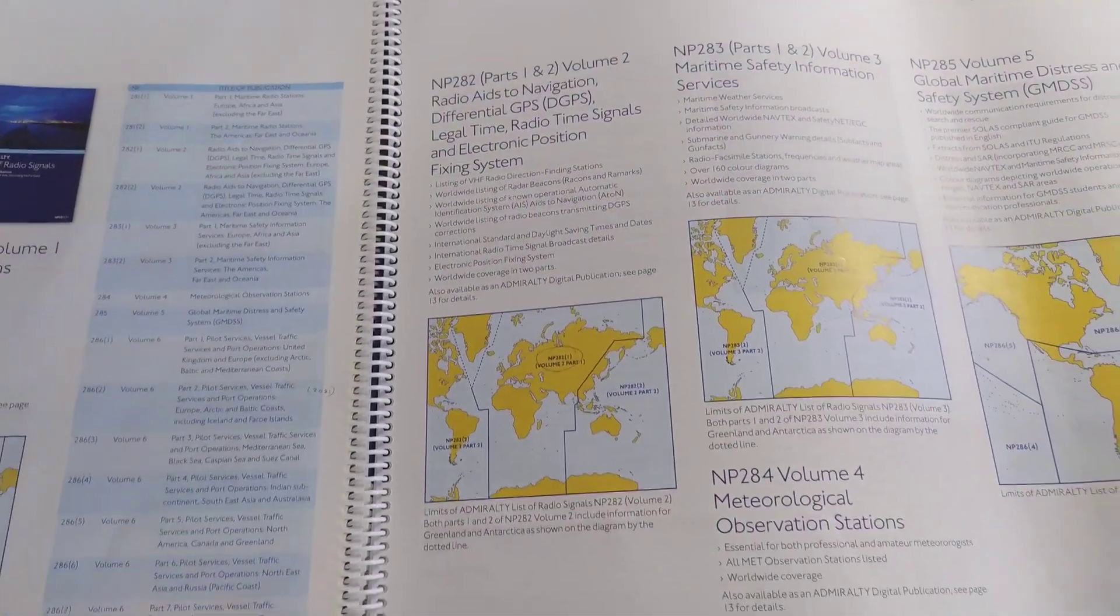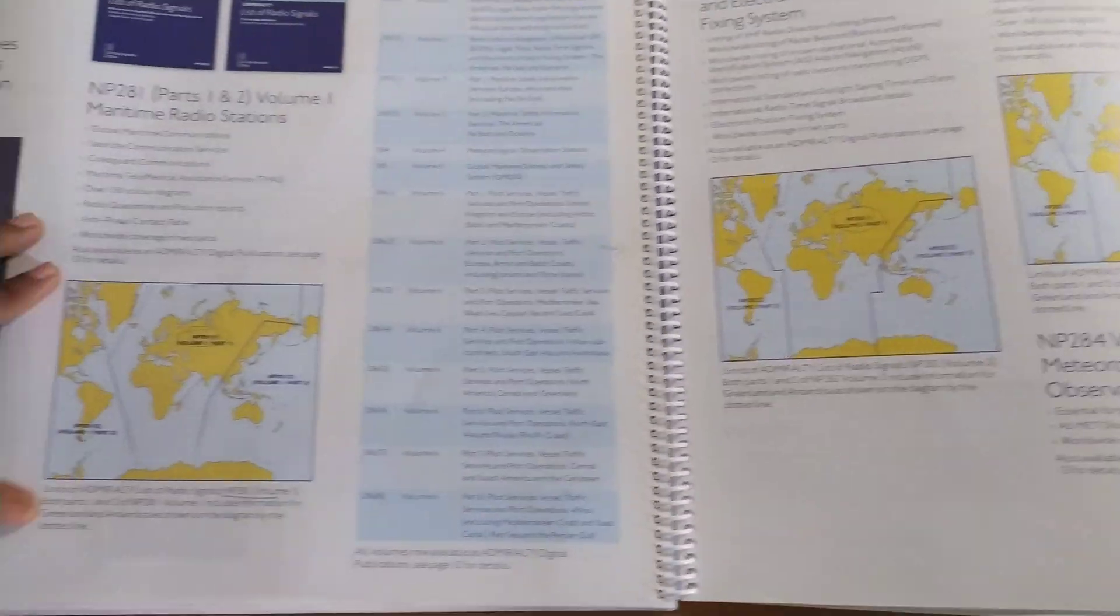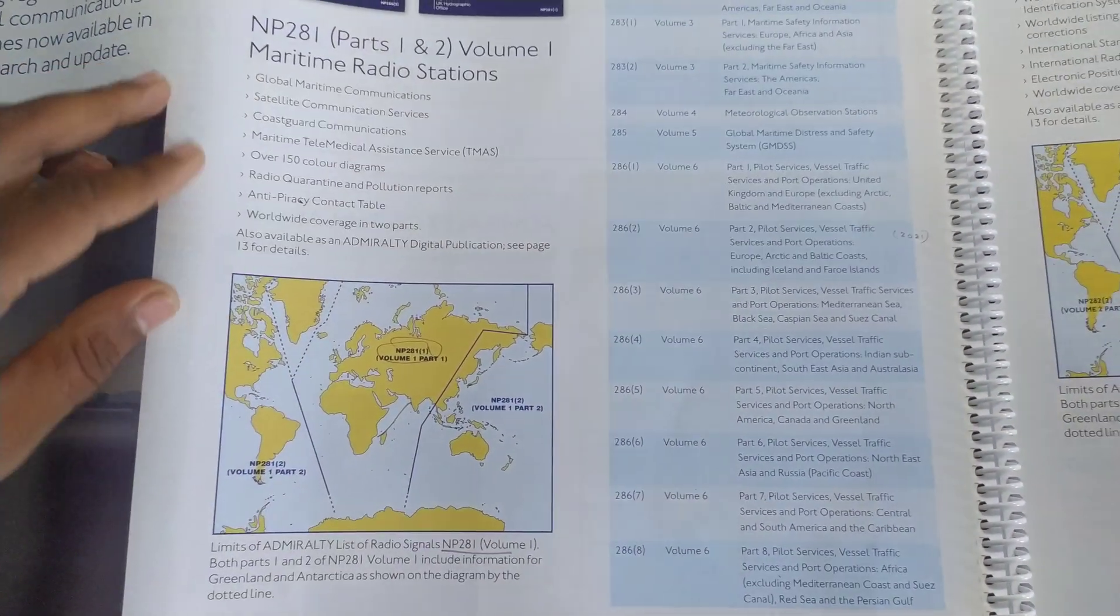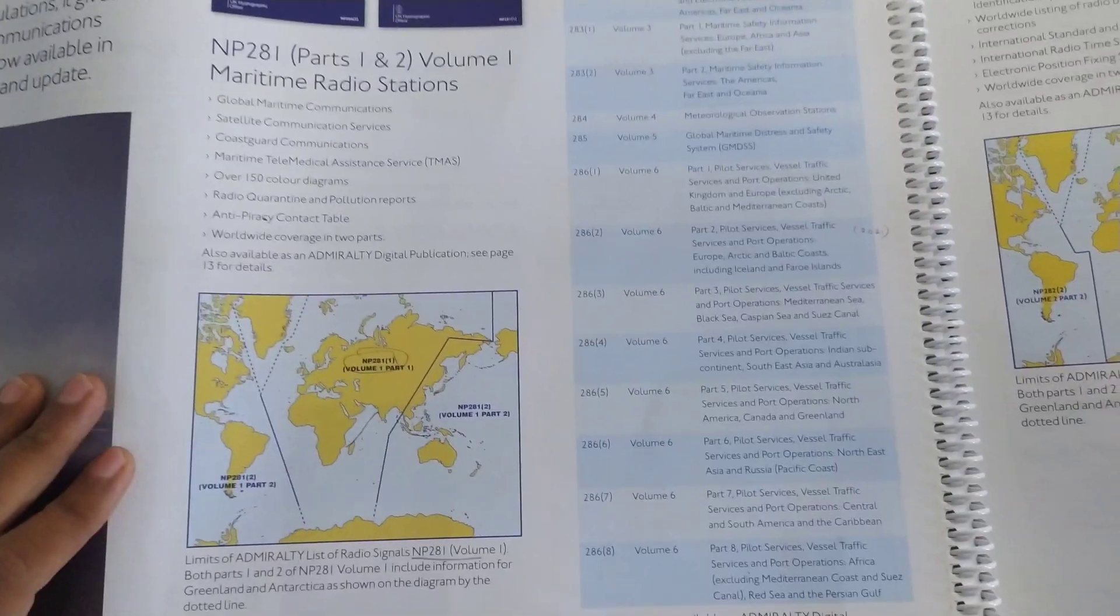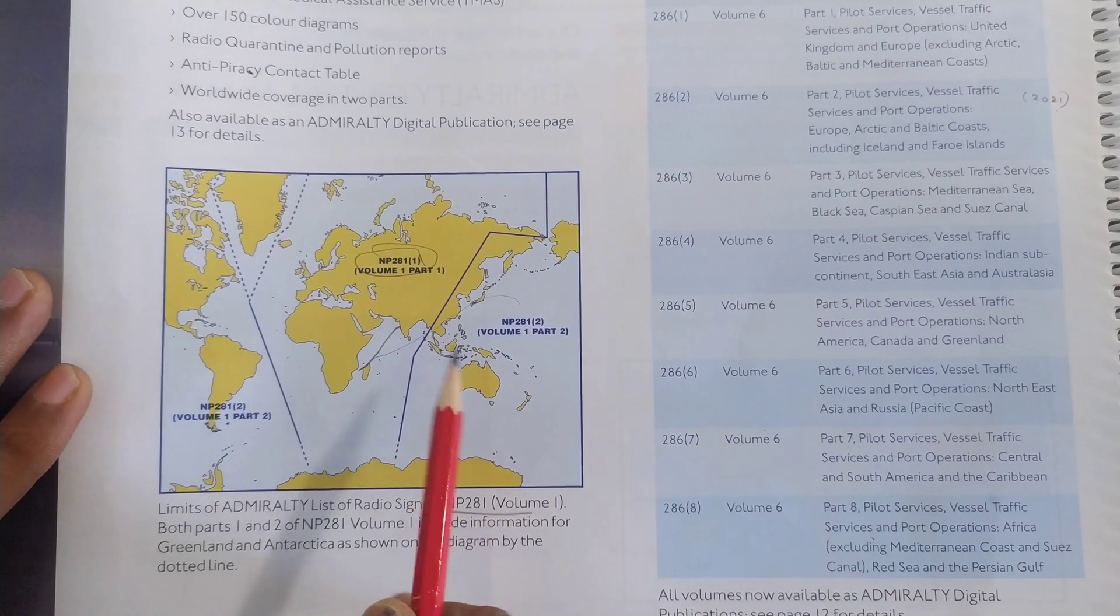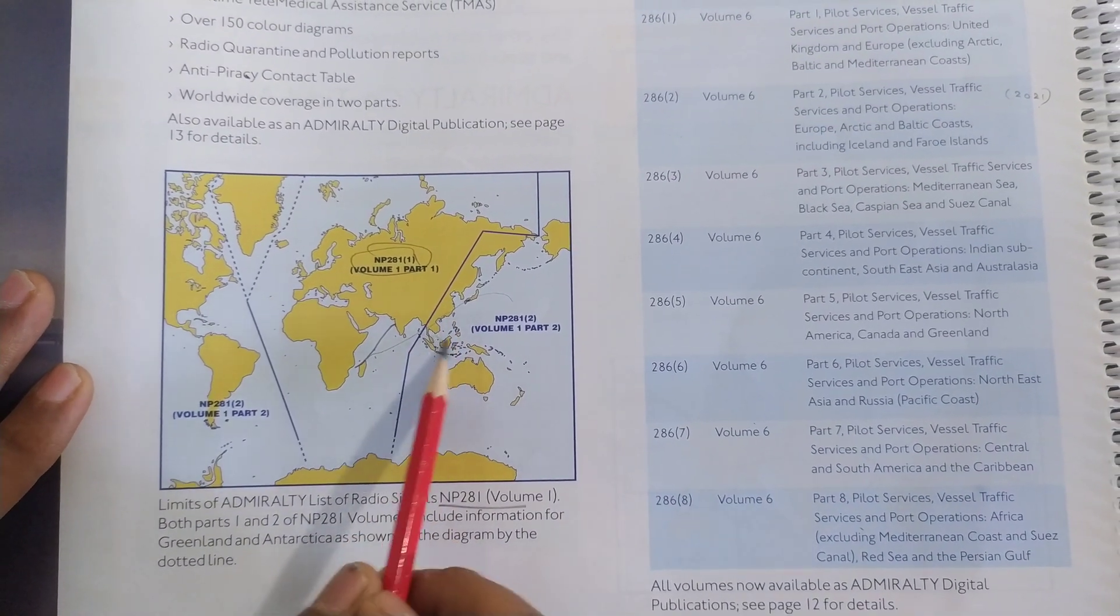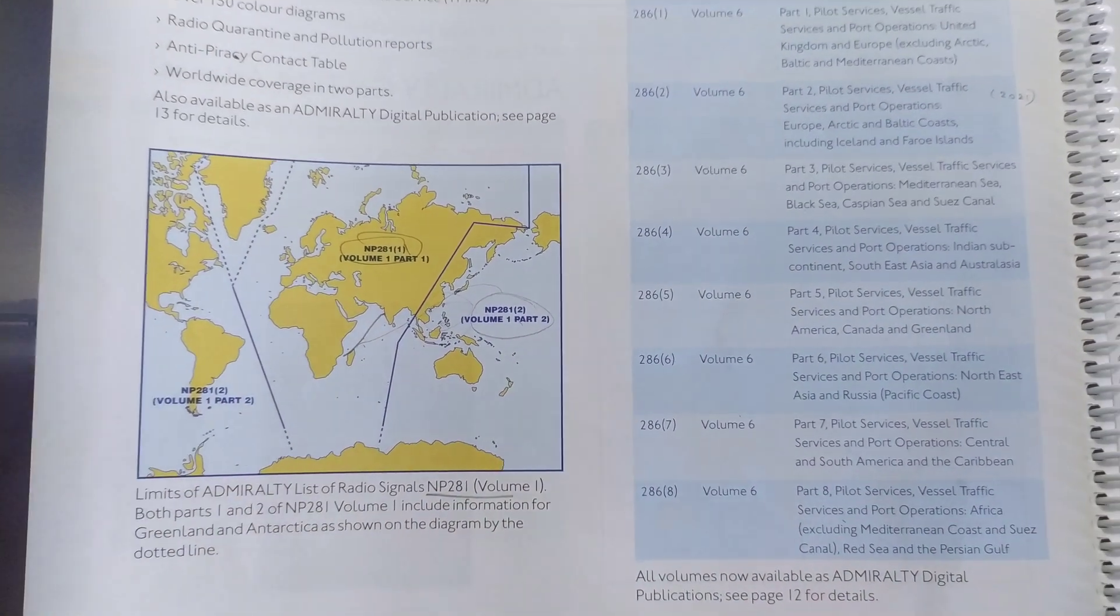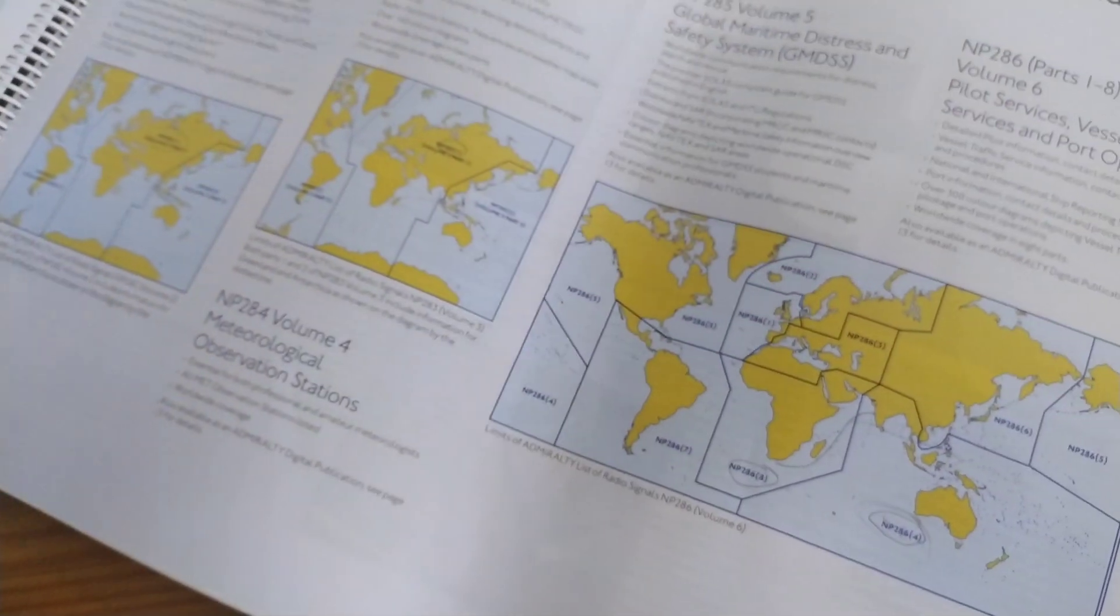Under ALRS, because we are going for NP 281, we will be selecting this. ALRS 281 is divided into two volumes, so you just draw a line on the index diagram and find where you are. We are basically somewhere here, so we will be using 281 volume 2.